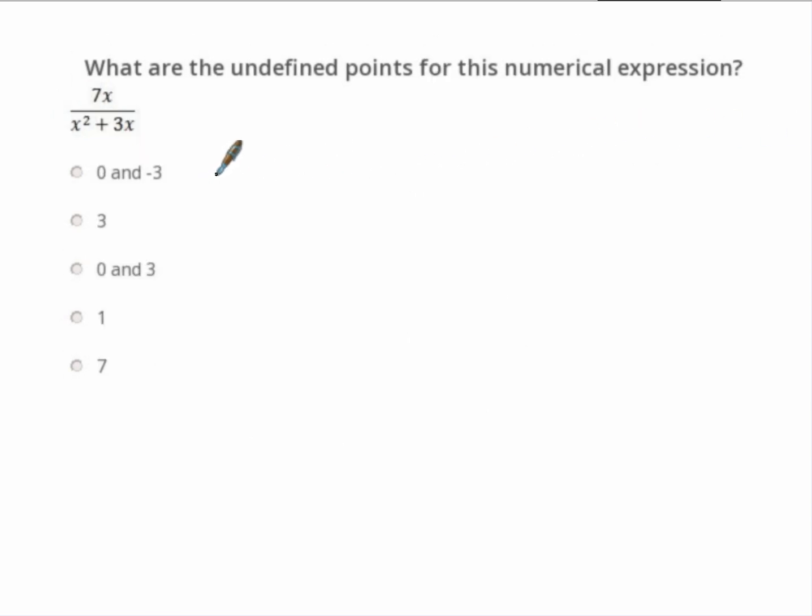Here is the third one. What are the undefined points for this numerical expression? Again, we're ignoring this top of it. We're not going to do anything with it. And then what we want is x squared plus 3x and we need this all equal to 0. And so use the answer choices to help you here. So if we put in let's put in a 0.